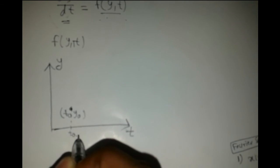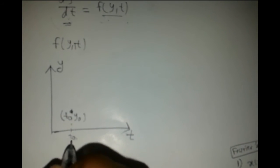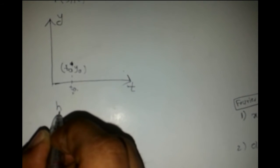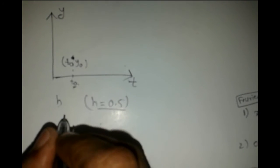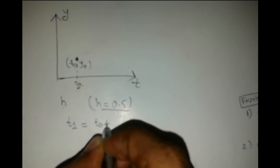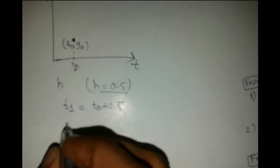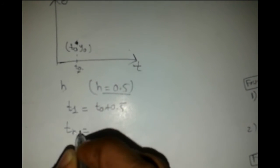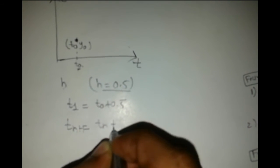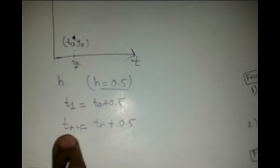In Euler's method, we take steps. Starting from t₀, for the next step we add a small quantity h — the step size — which depends on the user's choice. For better resolution, we choose a smaller h. In this example, I will consider h to be 0.5. So t₁ will be t₀ plus 0.5, and in general, tₙ₊₁ equals tₙ plus 0.5.